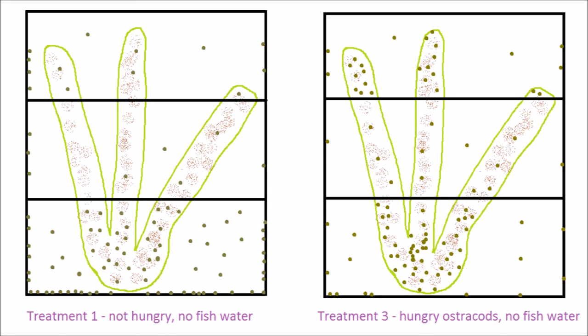Next is a comparison of treatments 1 and 3. Neither treatment has fish water, but in treatment 3, the ostracods are hungry, which leads them to spend more time on the Chara and less time on the ground or in the open water. Also, the hungry ostracods spend more time in the upper zone, perhaps to get access to the food higher up on the plant.